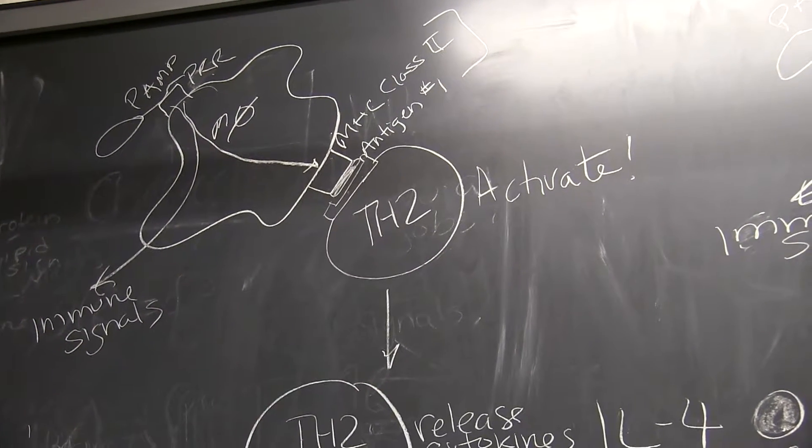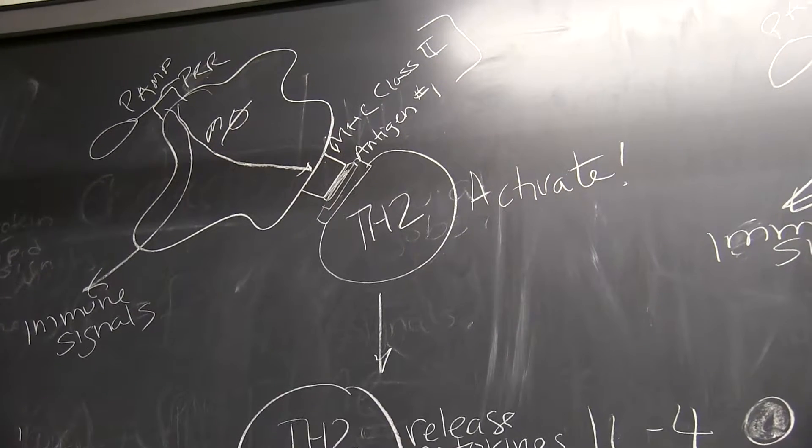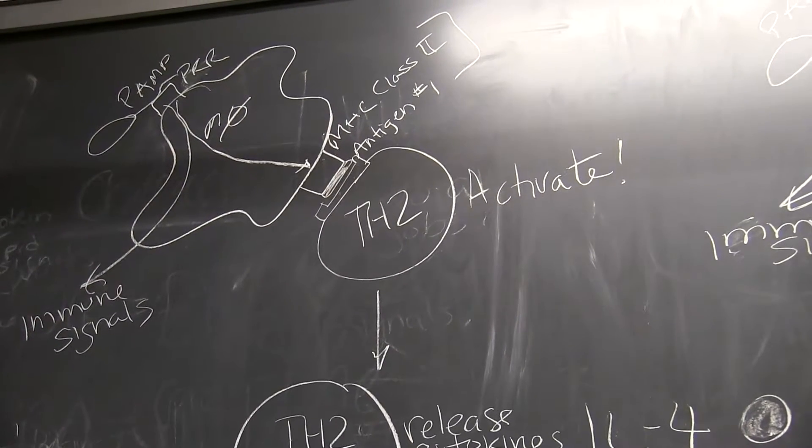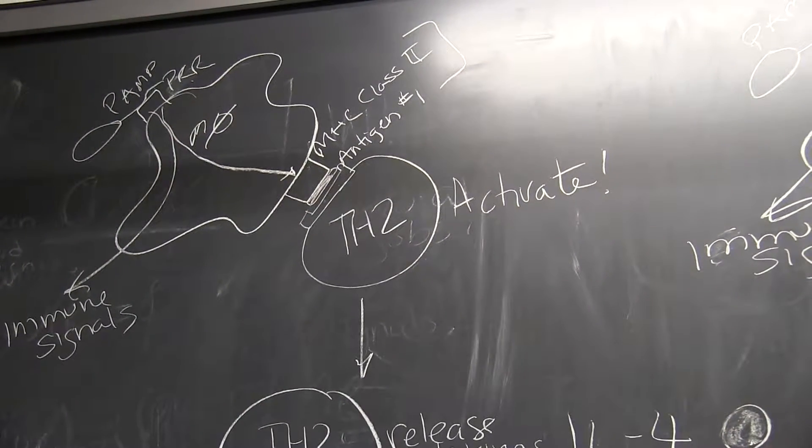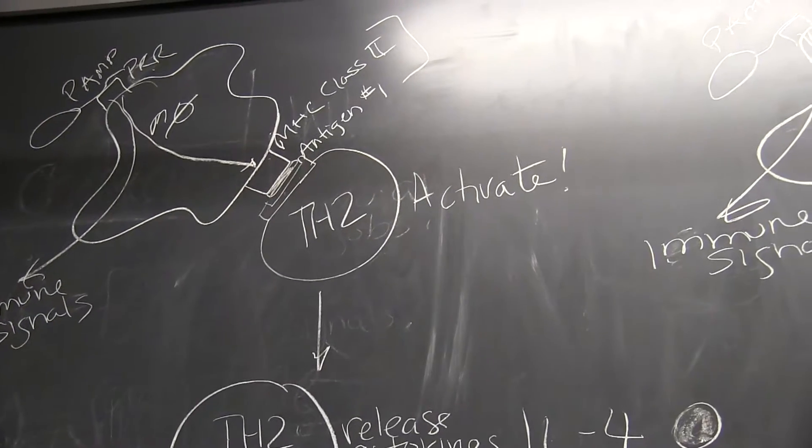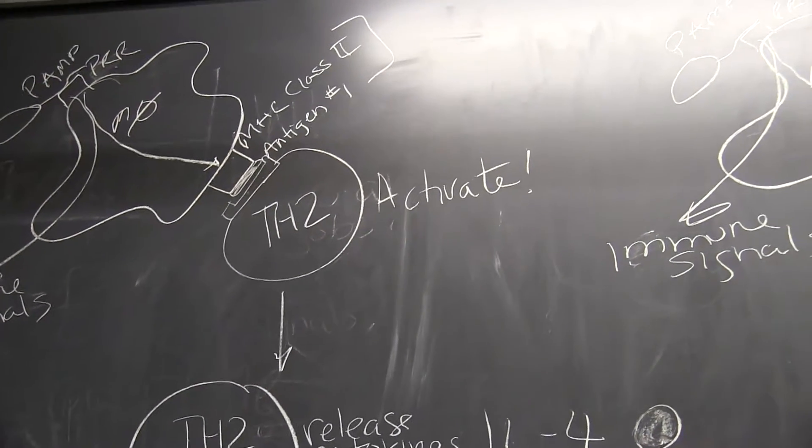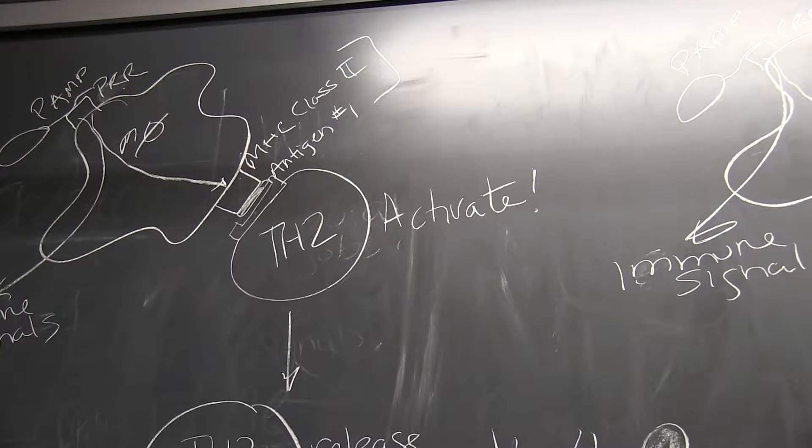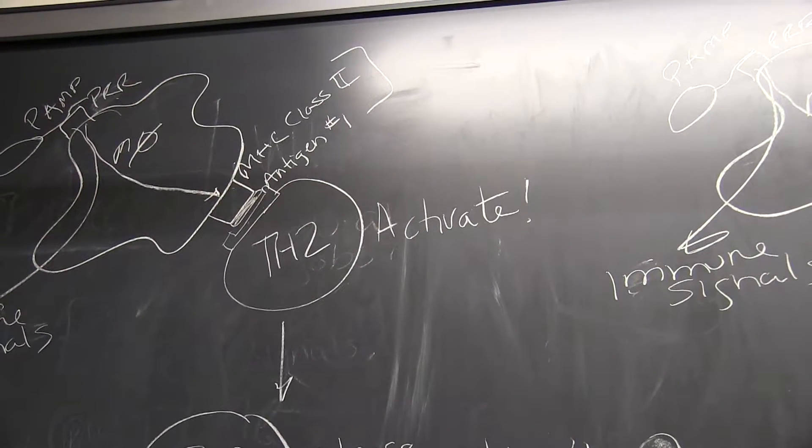Endocytosis brings the pathogen into a special compartment called the endosome, where the pathogen is broken up into lots of little pieces at random. One of those pieces, we're going to call antigen number one, is loaded into our antigen presenting receptor, MHC class two.